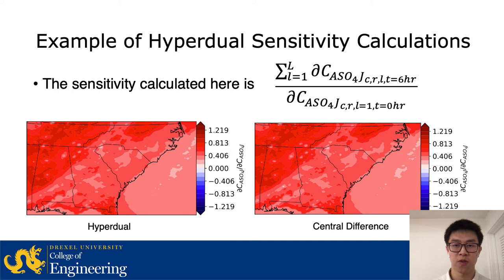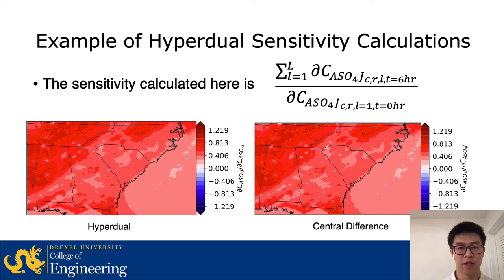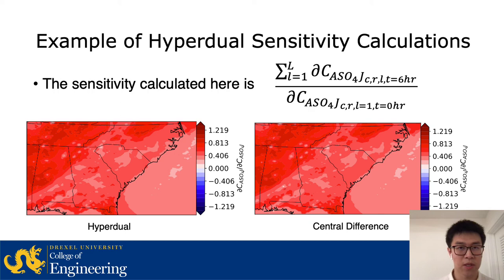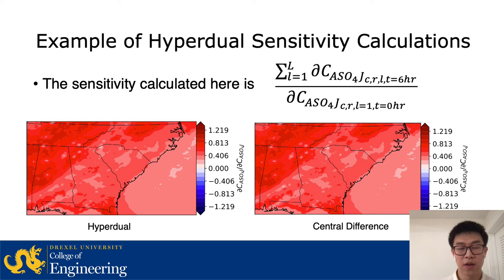Here are some preliminary results of our sensitivity evaluation. Currently four modules in CMAQ are not yet hyperdual-compatible: cloud, photolysis, horizontal advection, and horizontal diffusion, so all results are run without those modules. The first sensitivity presented is the column sensitivity of accumulation mode sulfate at hour R=6, summed over all layers, with respect to an initial perturbation at layer 1 of accumulation mode sulfate. Without being told which is hyperdual and which is central difference, it is very hard to distinguish between the two maps.